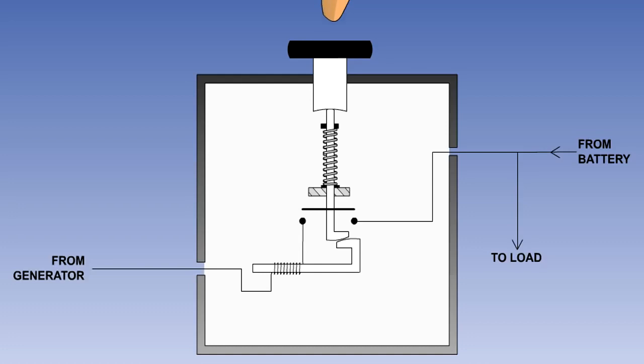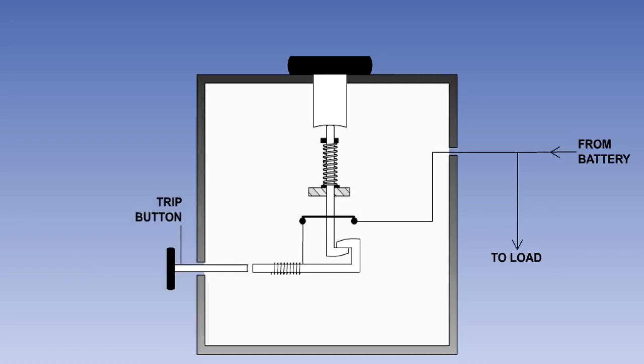Once tripped, an RCCB can only be reset by pushing the manual reset button. There is usually also a manual trip button on the unit.